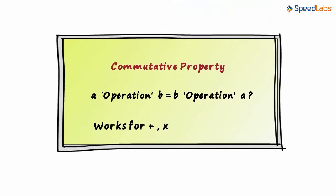To find out if the commutative property is satisfied for an operation, all you need to do is find out if a operation b is equal to b operation a. If yes, then the property is satisfied.